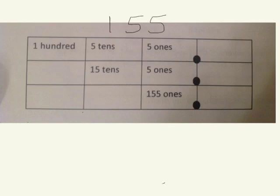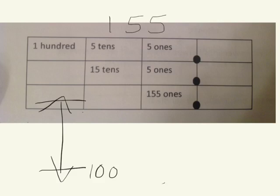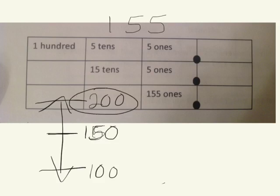To round one hundred fifty-five to the nearest hundred, we draw our vertical number line. We have 1 hundred and some more; the next number up would be 2 hundred. The midpoint is one hundred fifty. Our number is one hundred and 5 tens, which is exactly 150 — exactly at the midpoint. So we round up to two hundred.